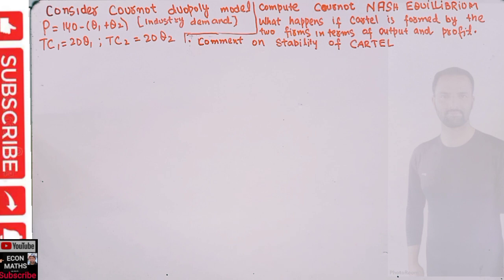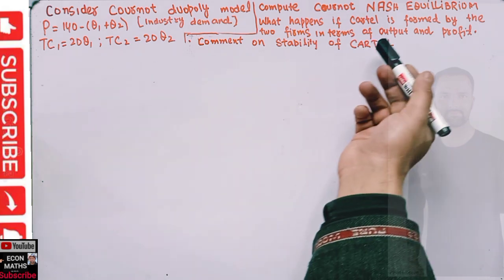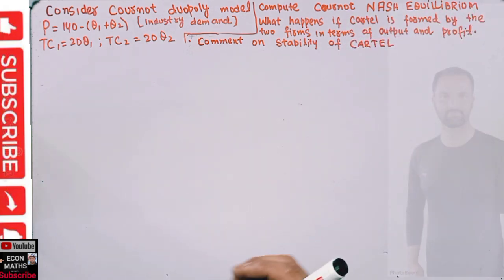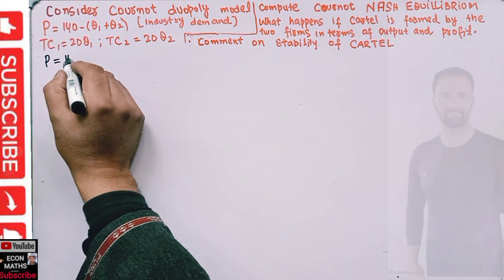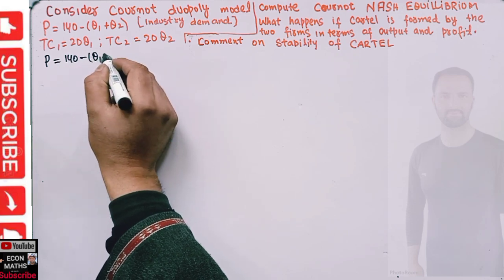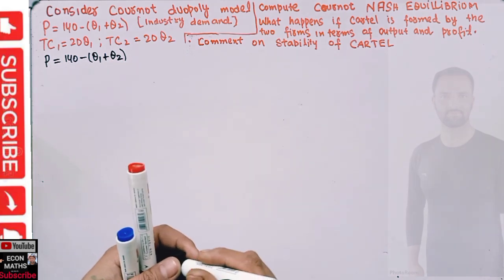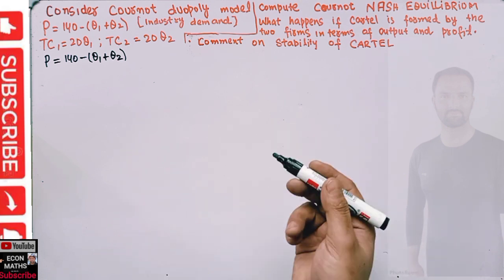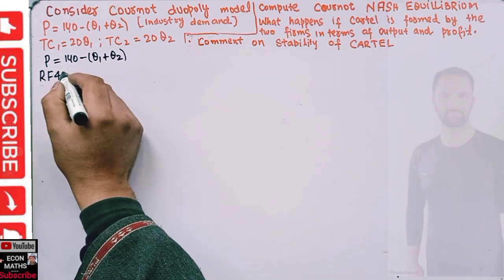Now let's solve this question. I have made a video on Nash equilibrium so I will not go into detail on that. First we will calculate the Cournot-Nash equilibrium. Our industry demand is P = 140 minus (q1 plus q2). To get the Cournot-Nash equilibrium, first we need to calculate the reaction function for firm 1.